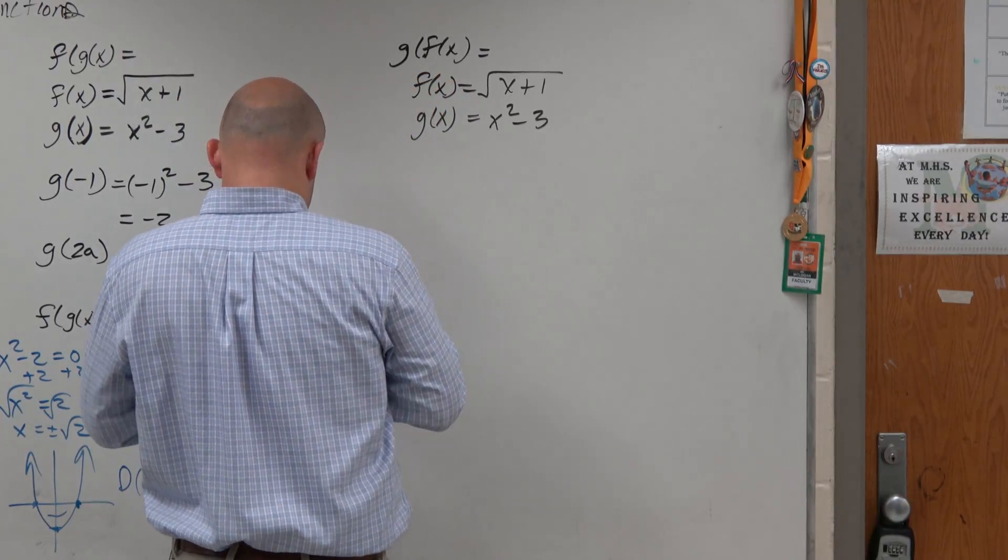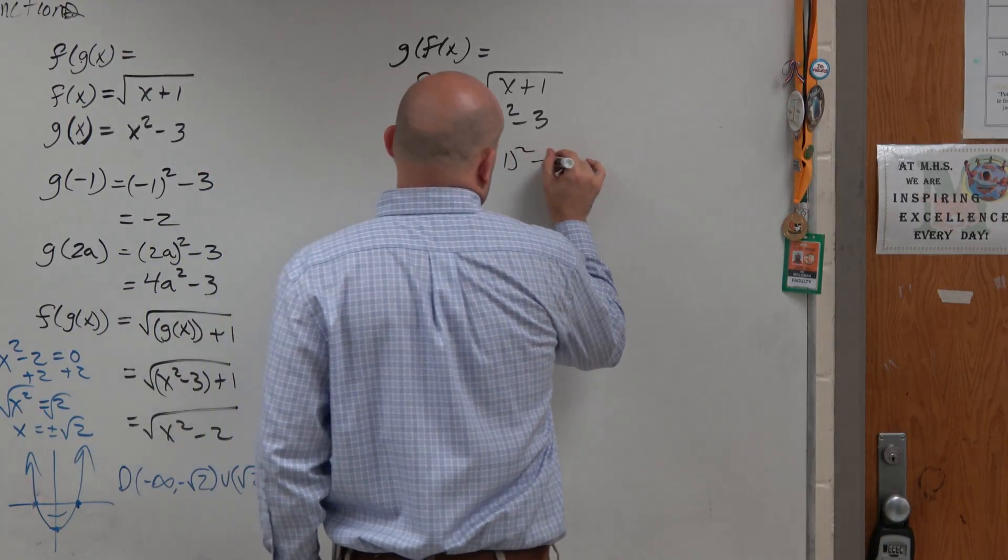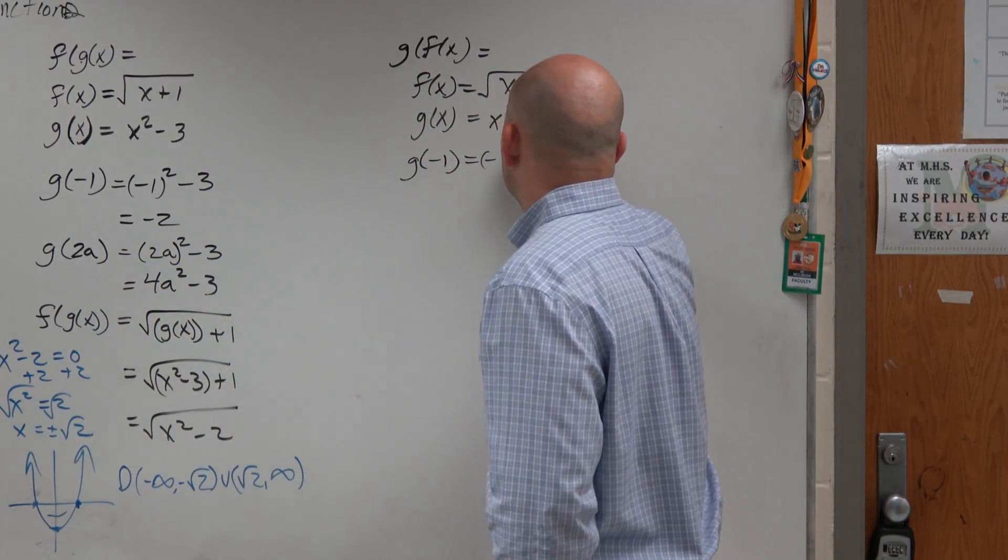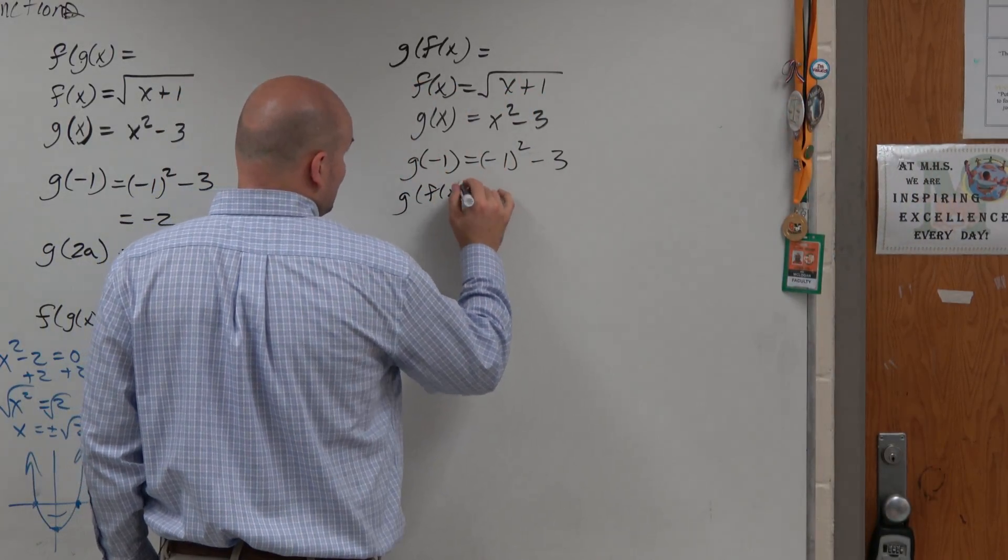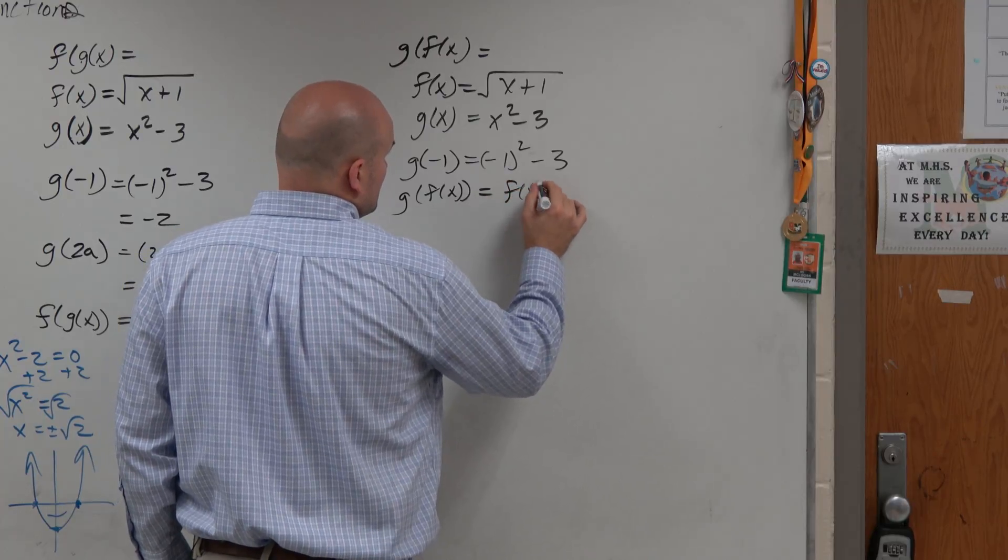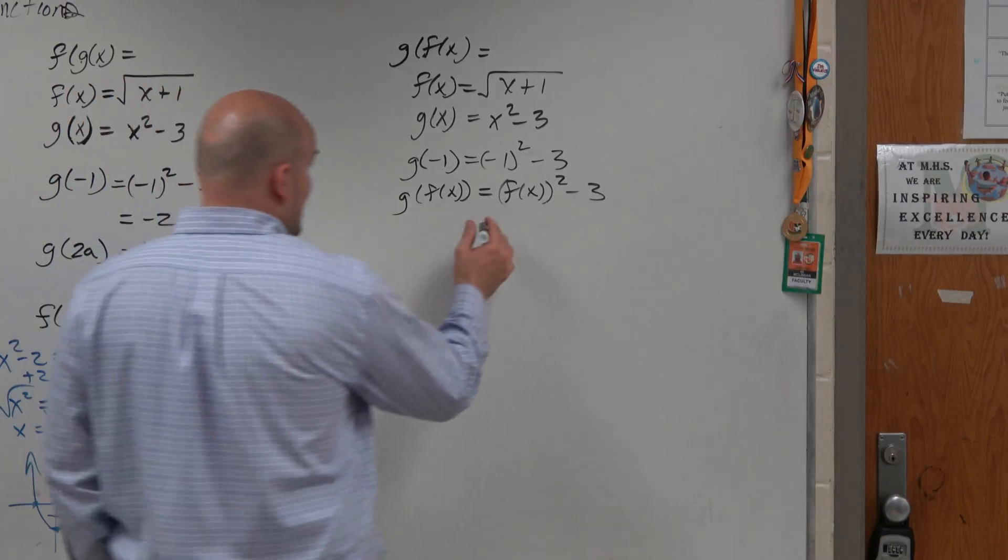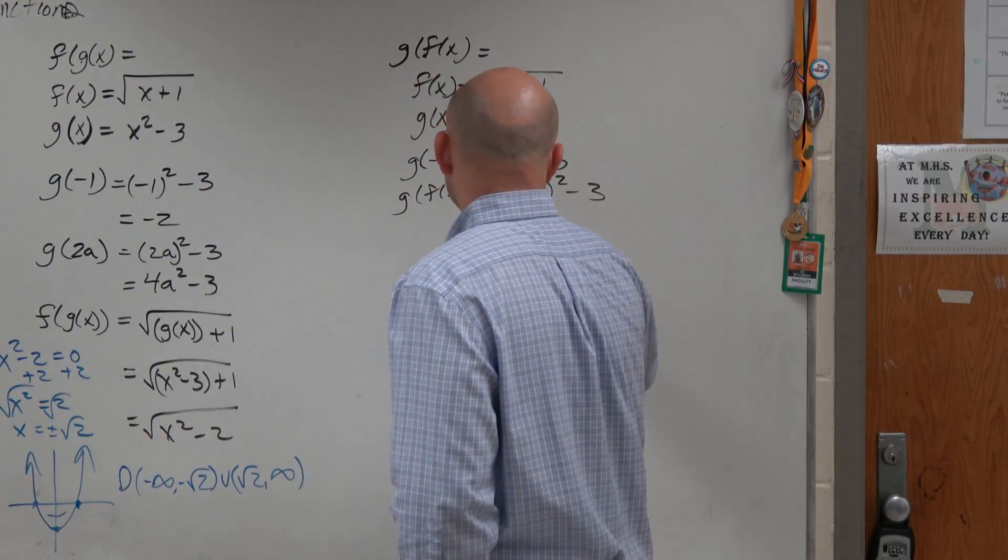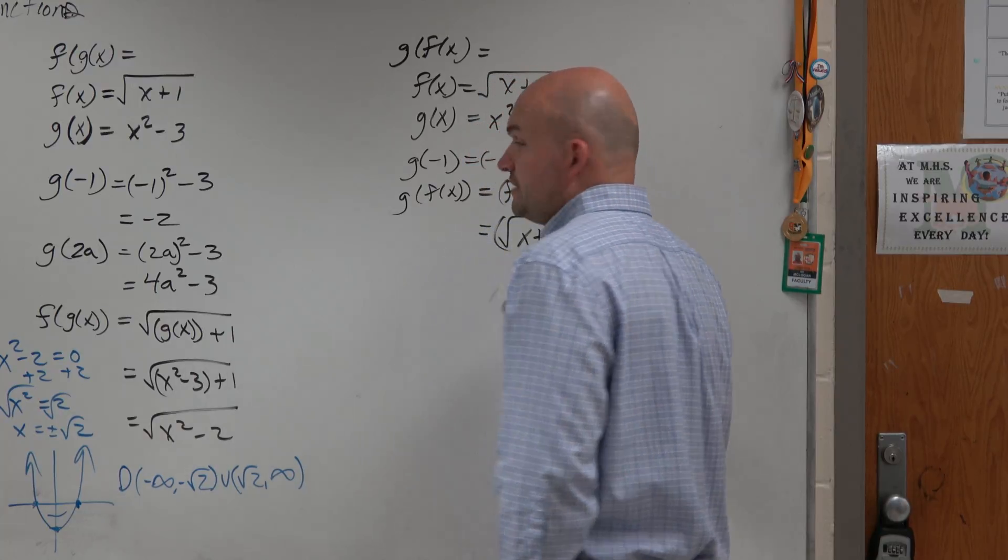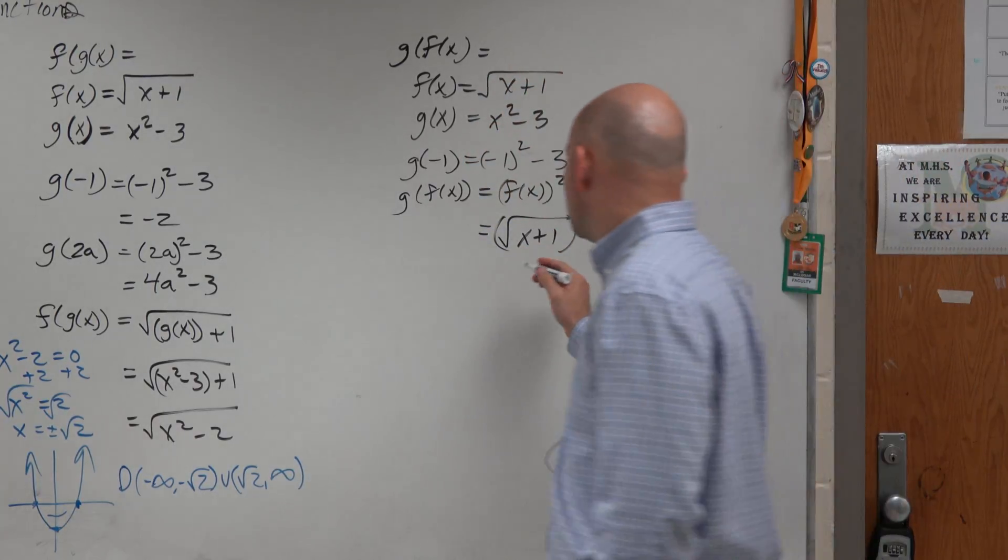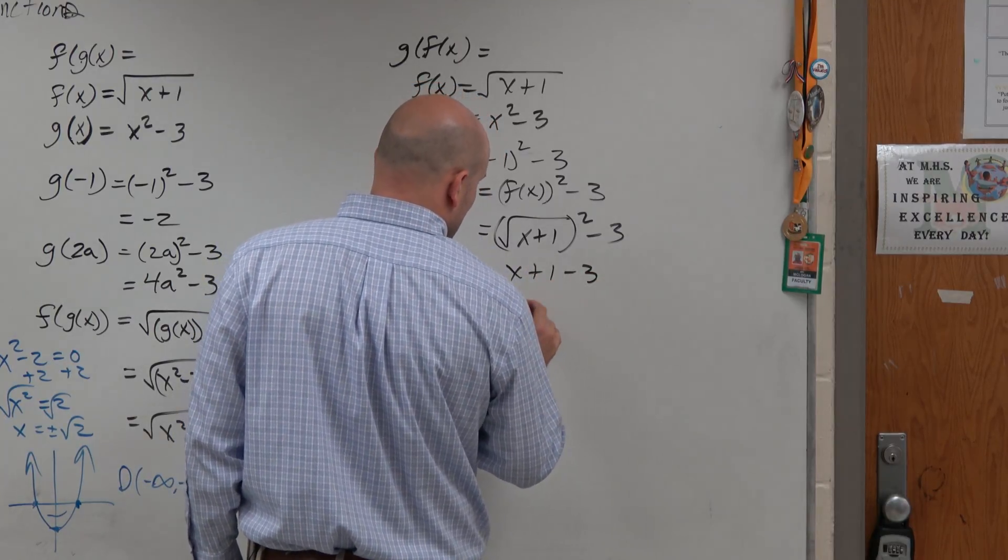So g of negative 1 equals negative 1 squared minus 3. So therefore, if I want to do g of f of x, all I'm doing is plugging in f of x. Yes? And f of x is defined here as square root of x plus 1 squared minus 3. And the square root of something squared is just x plus 1 minus 3. So the answer is x minus 2.